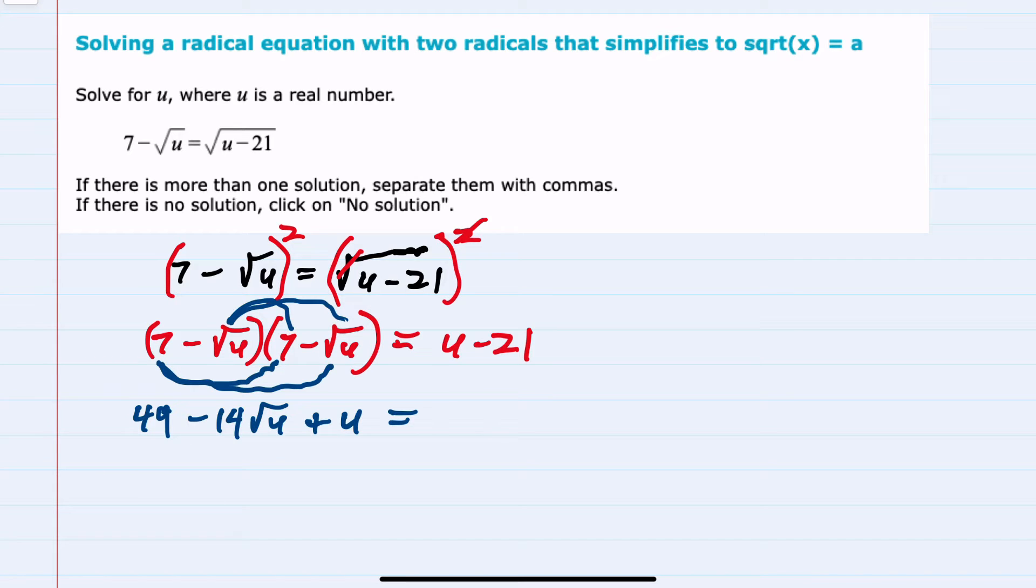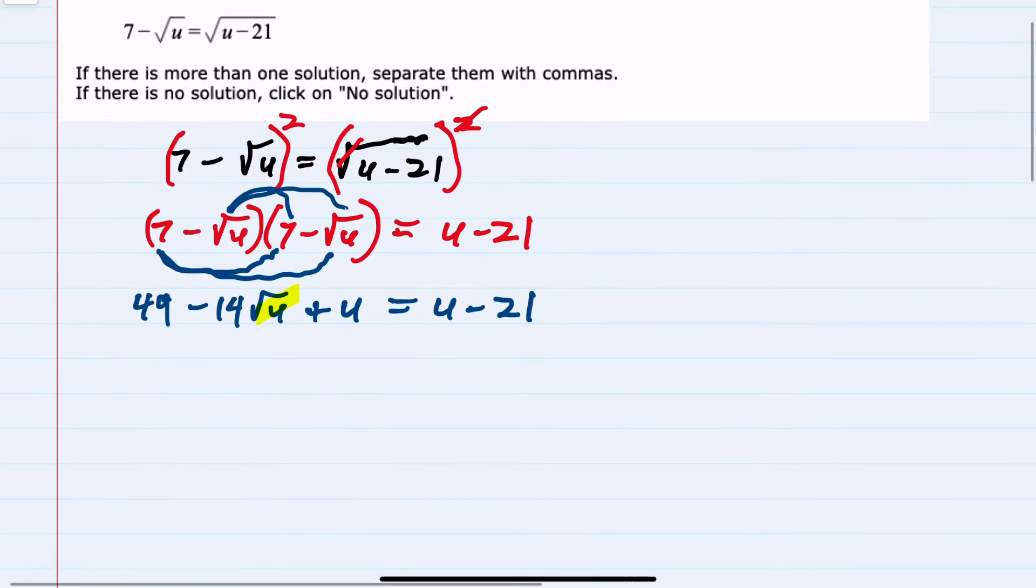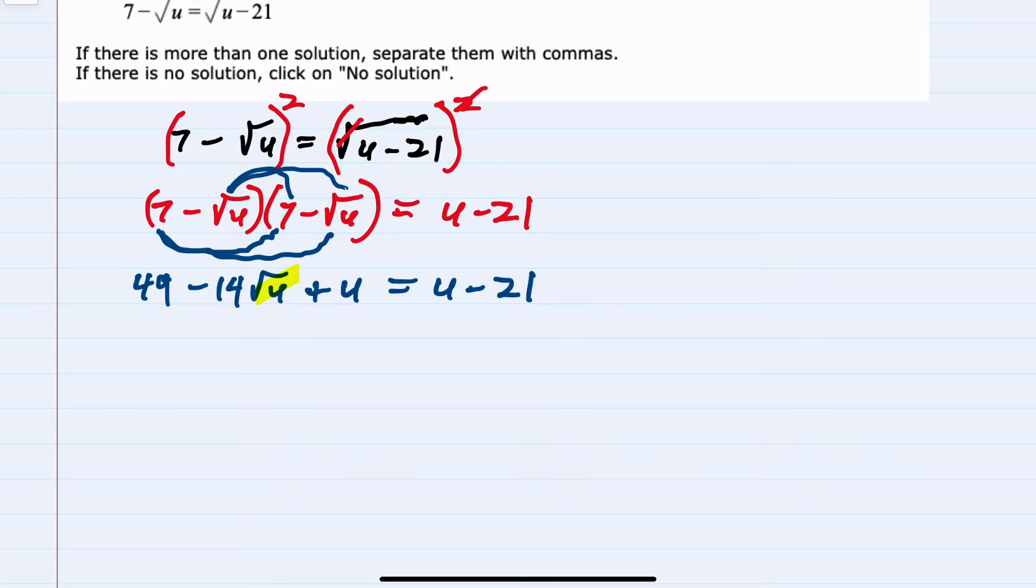On the right-hand side, we've already simplified as much as possible, just u minus 21. And here again, we have this one radical that I would like to isolate so that I can then square and get rid of the radical. In my first step, I can just move these other terms to the other side.